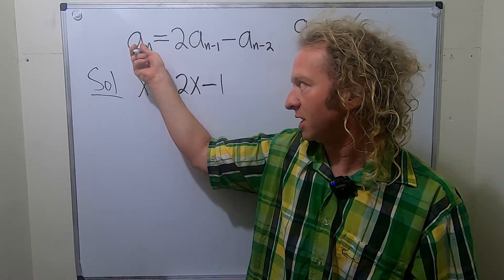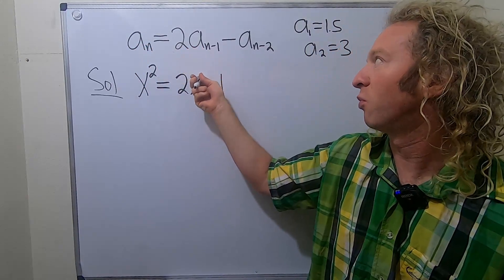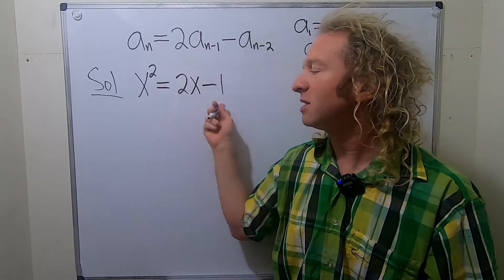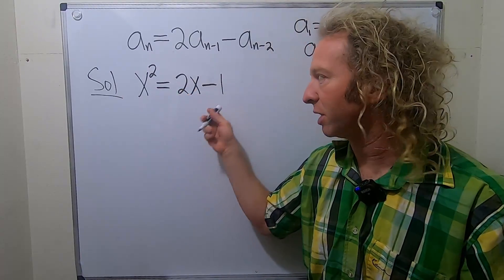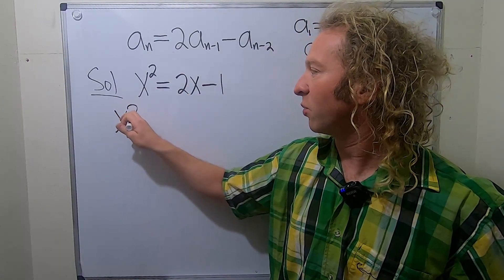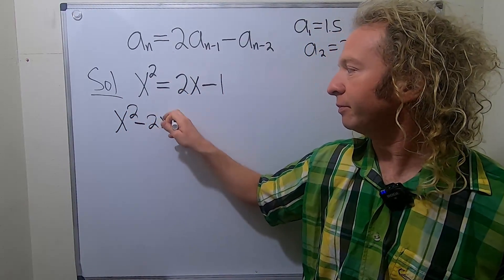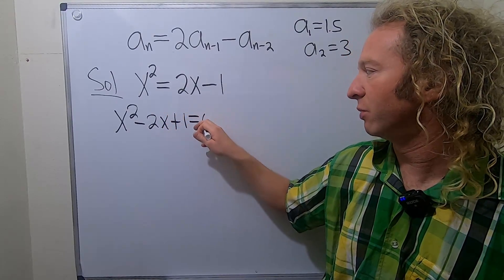So you always just, if there's an a_n, you put a 2, and minus 1, you put a 1, and this is always a constant. This is a quadratic equation, so we set it equal to 0. So minus 2x and plus 1. So we have x squared minus 2x plus 1 equal to 0.